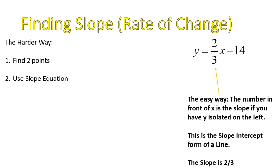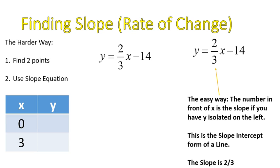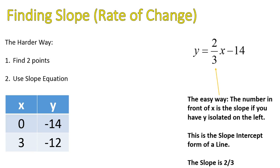Now, let's say you don't trust that and you want to do it the harder way. That's fine. Some people like doing things the hard way. The hard way is to actually pick two points and then use that slope equation that we've shown several times. So here is what we're going to do. I'm going to pick the point 0 and 3 for my x value. I'll solve for my y value, and then I'll use the slope equation. So I substitute 0 into my equation. 2 thirds times 0 is 0. And my y value would be negative 14. So I'll plug that into my table. Now I'm going to put the number 3 into this equation. 2 thirds times 3 equals 2. 2 minus 14 is equal to negative 12. So now I have two points.